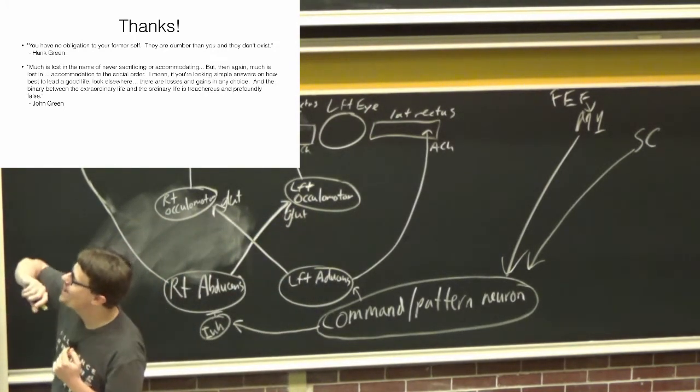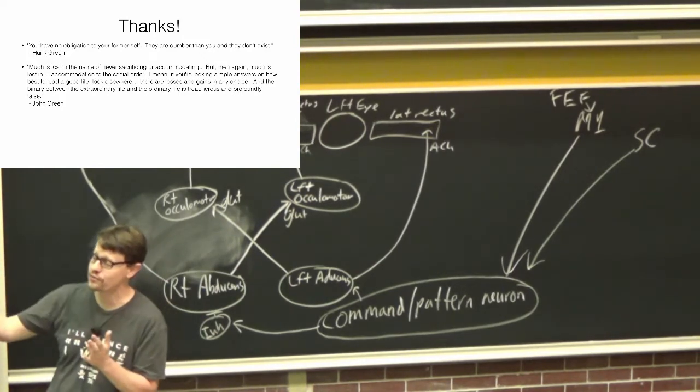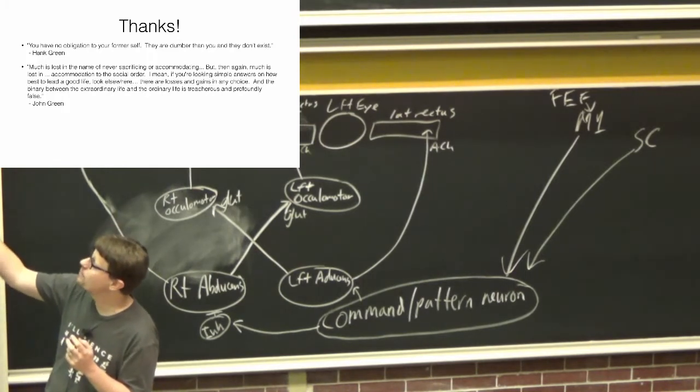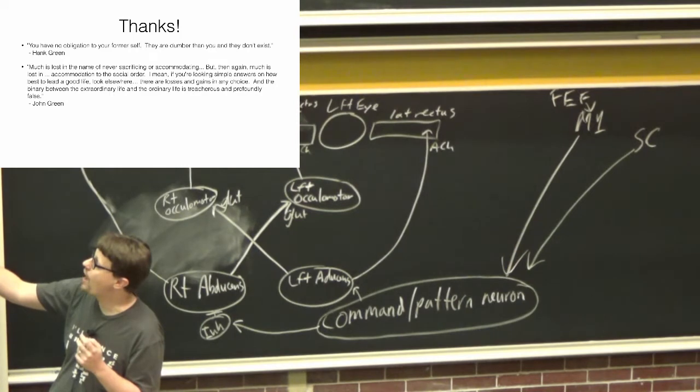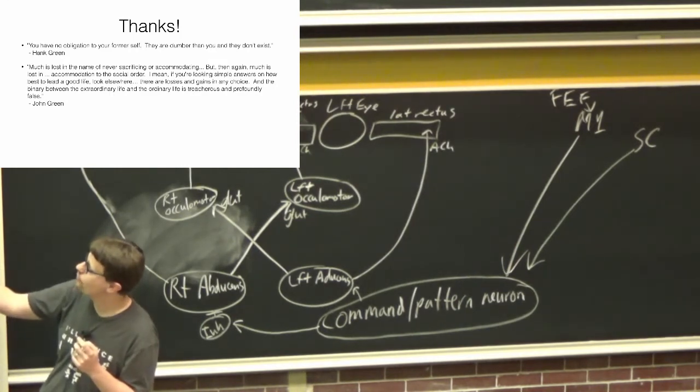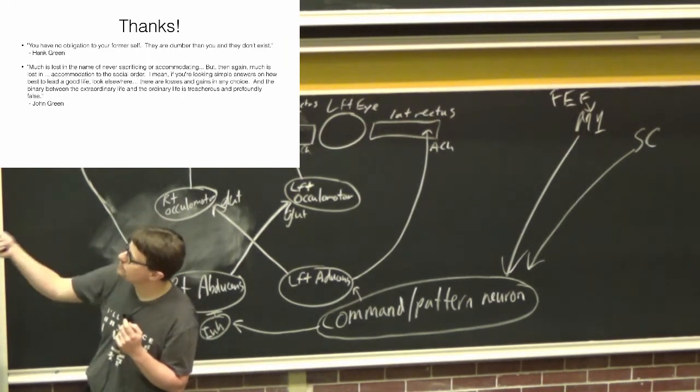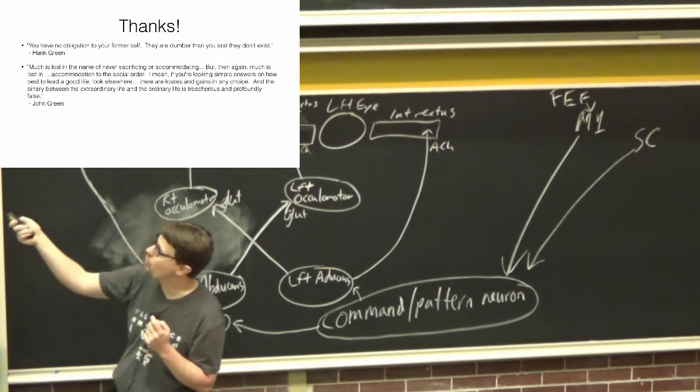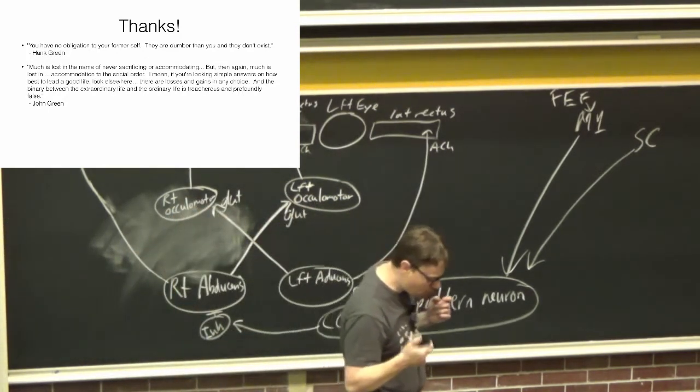There's a longer quote from his brother John Green: 'Much is lost in the name of never sacrificing or accommodating, always following your heart. But again, much is also lost in always accommodating and always sticking with things. If you're looking for simple answers on how to live a good life, look elsewhere. There are losses and gains in any choice, and the binary between extraordinary life and ordinary life is treacherous and profoundly false.'